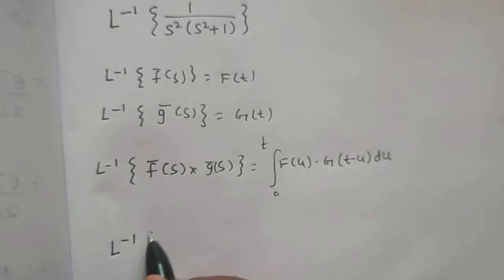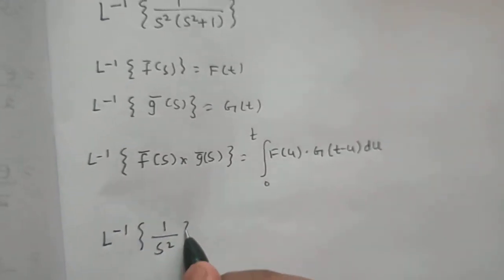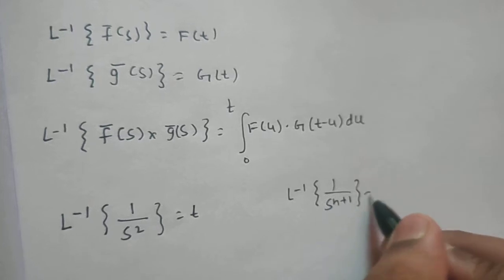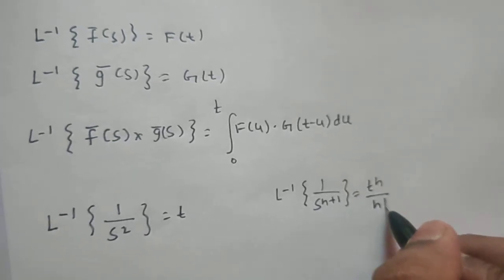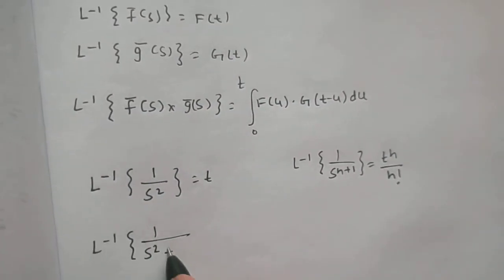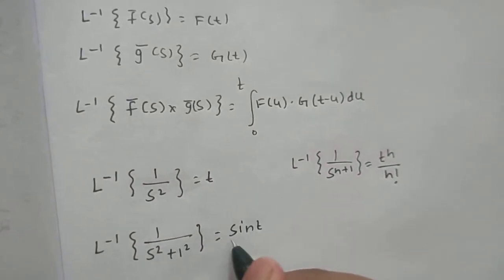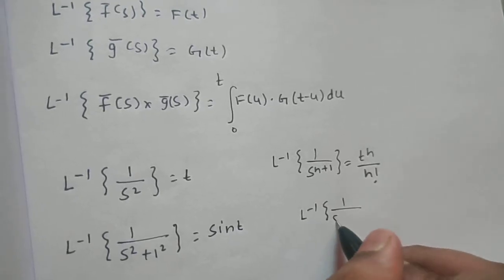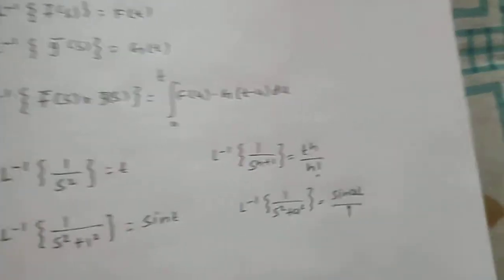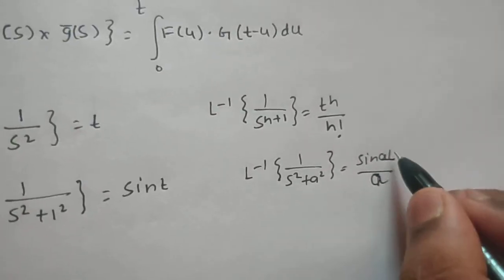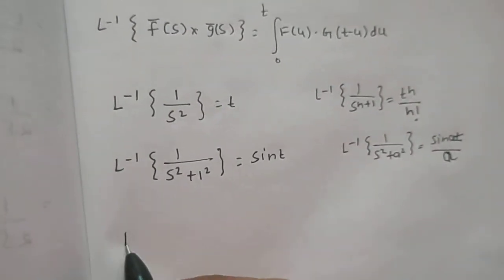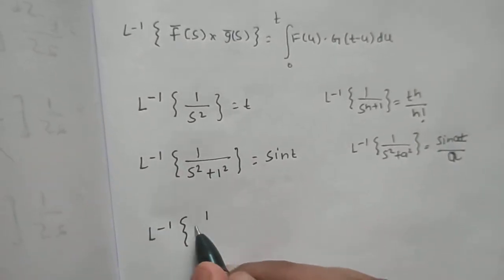The Laplace inverse of 1 upon s squared is t, because the Laplace inverse of 1 upon s^(n+1) is t^n divided by n factorial. And the Laplace inverse of 1 upon (s squared plus 1) is sin(t), because the Laplace inverse of 1 upon (s squared plus a squared) is sin(at) divided by a. Here a equals 1, so we simply get sin(t).